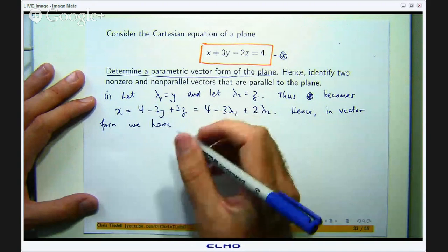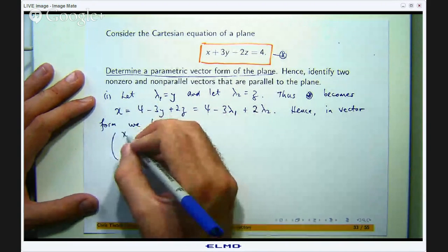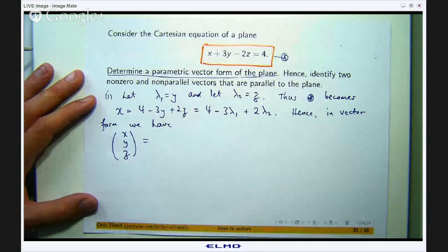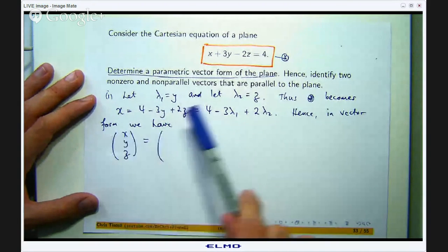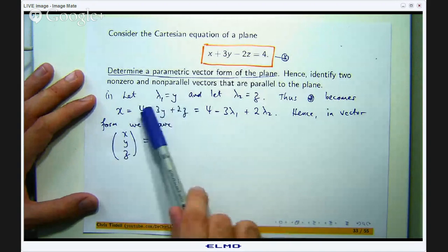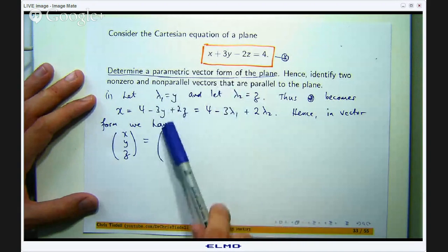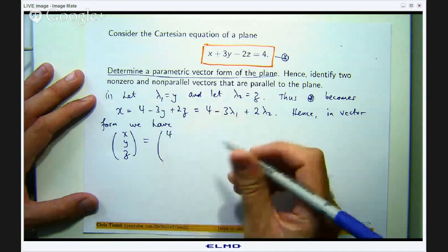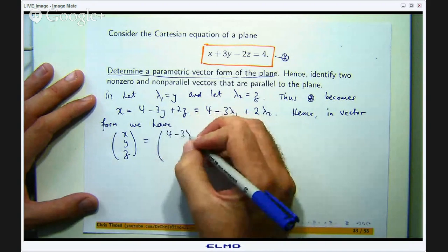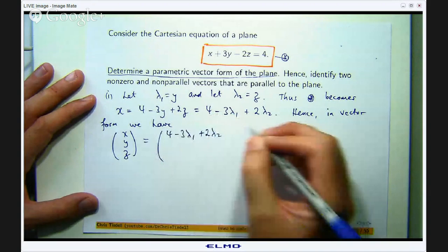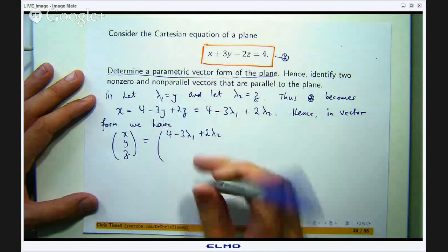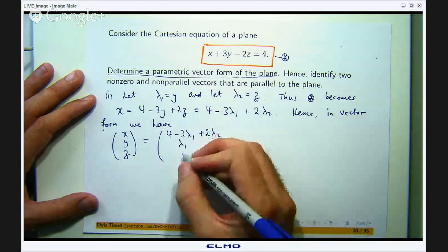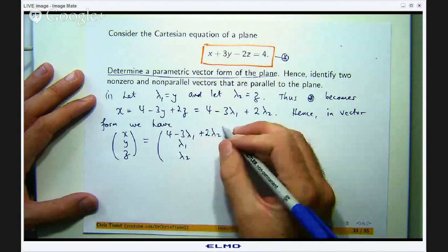So let us write the x, y, z as a column vector and write the respective sides of these three things in the column. So x is 4 minus 3λ1 plus 2λ2. So y is just λ1 and z is λ2.